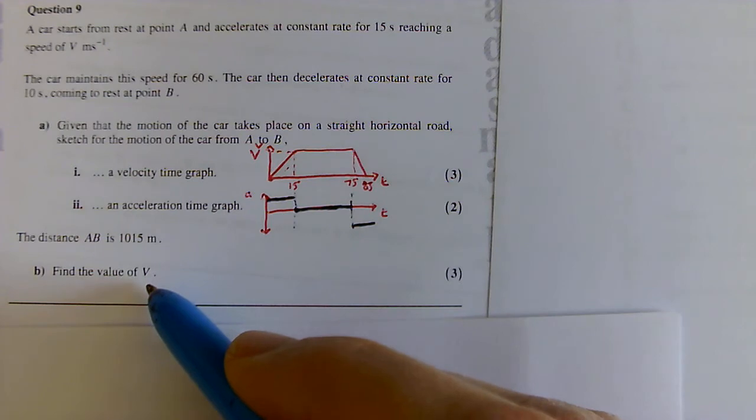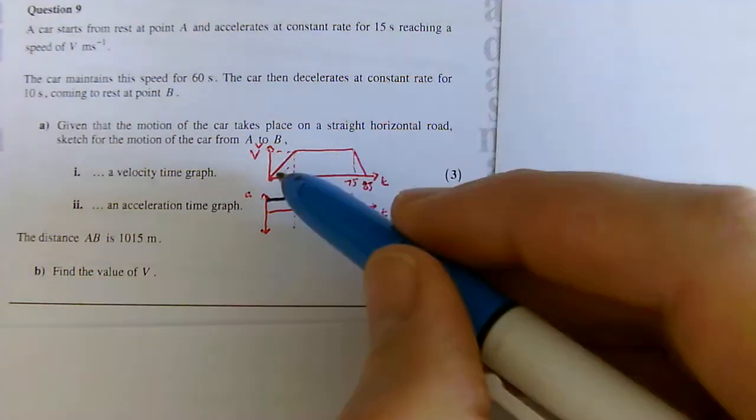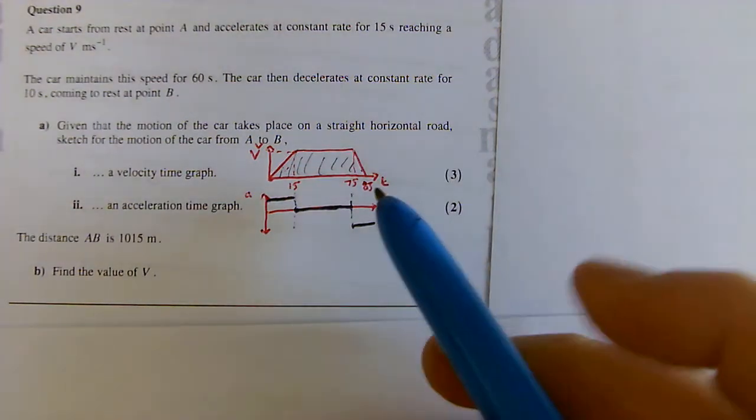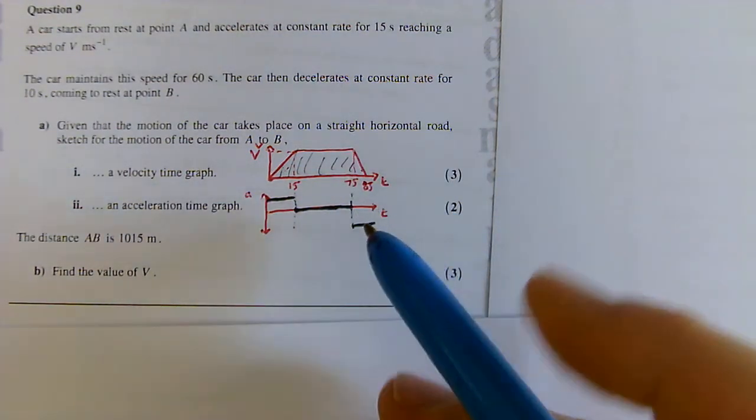Now, the last bit asks us to find the value of V. And in fact, I'm going to do that by using the distance under the curve. Now, the quickest and easiest way to do it here is to realise that I've got a trapezium here.